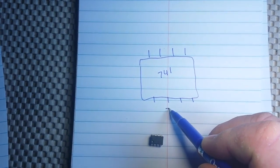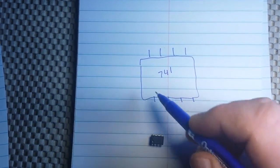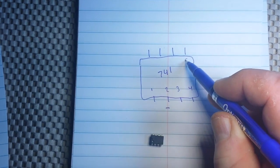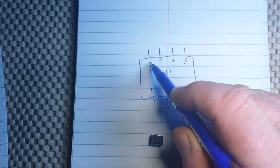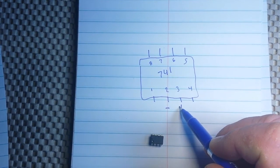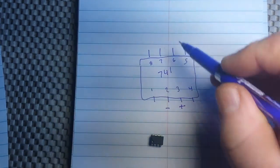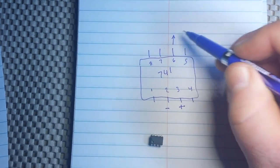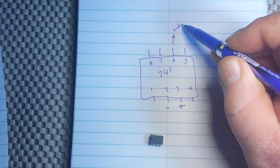We have our inverting input here. This is pin 1, 2, 3, 4, 5, 6, 7, and 8. On pin 2 we have our non-inverting input here and we have our output here on pin 6.